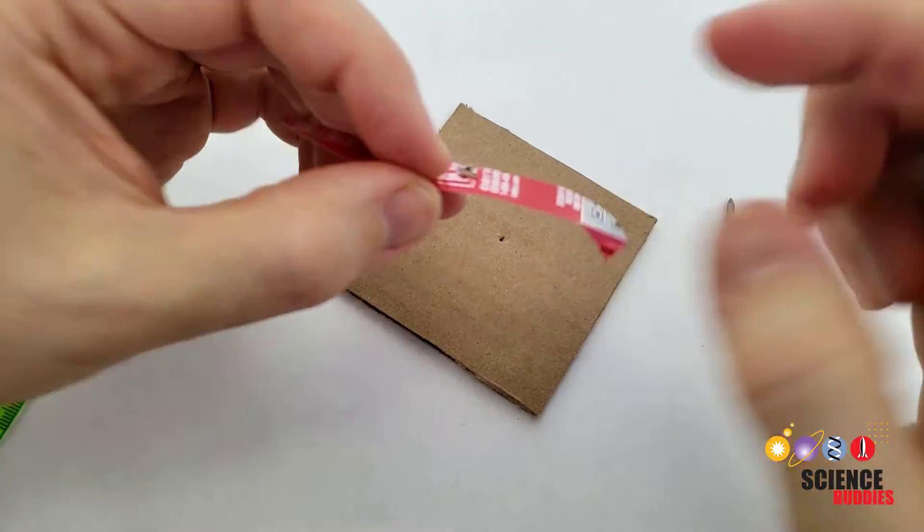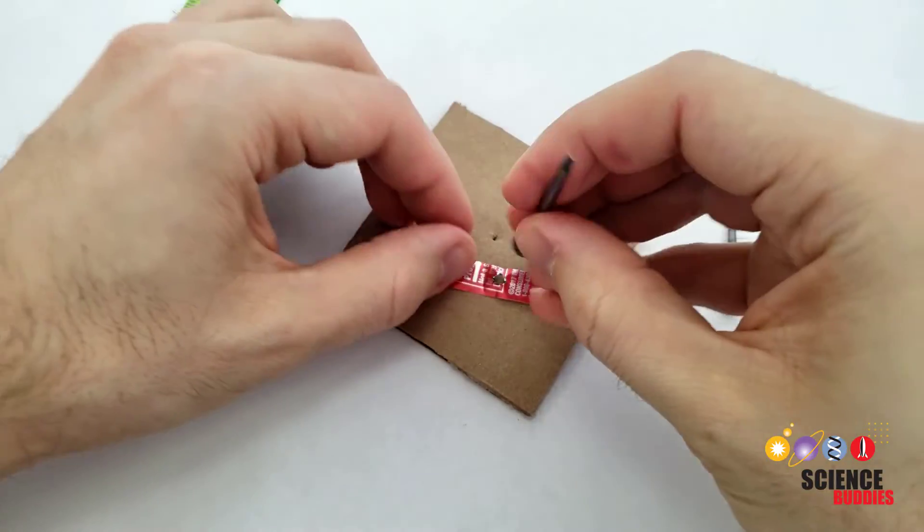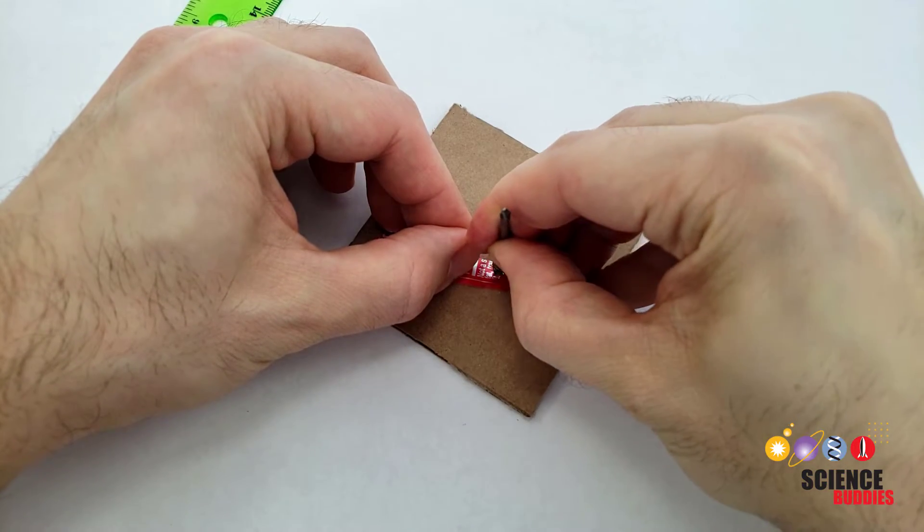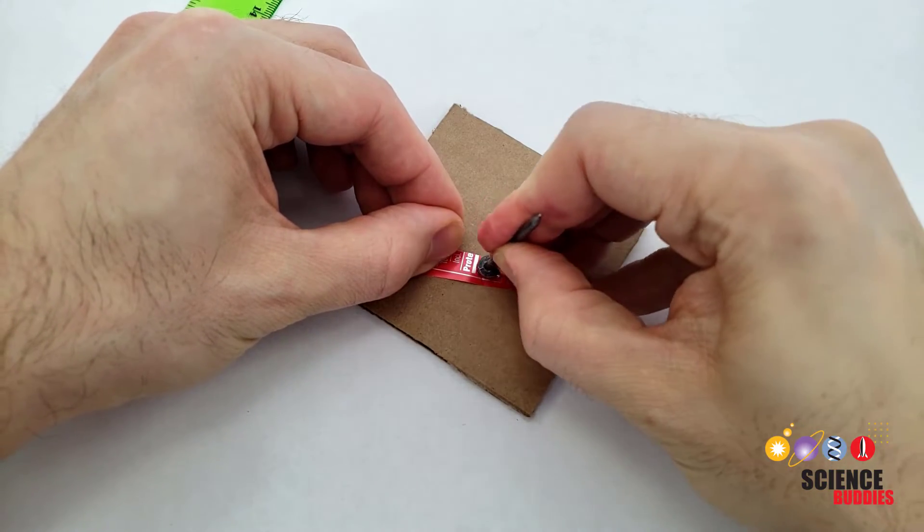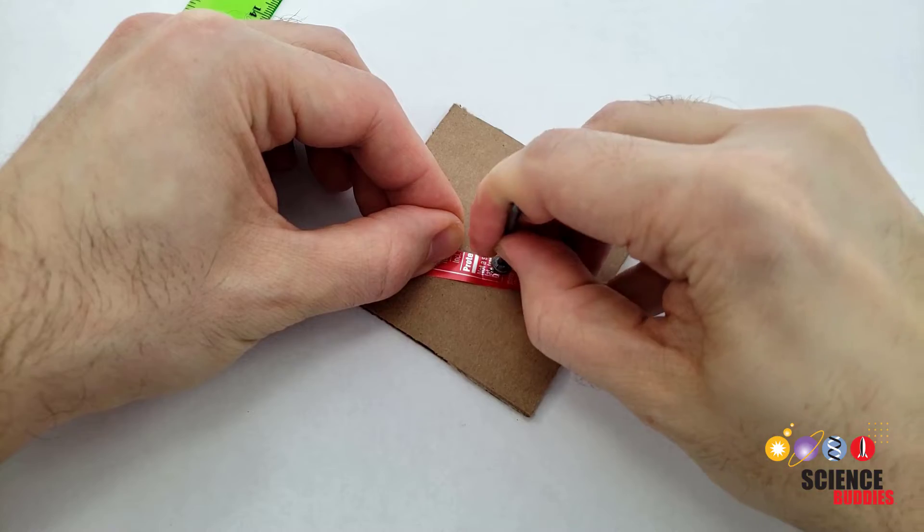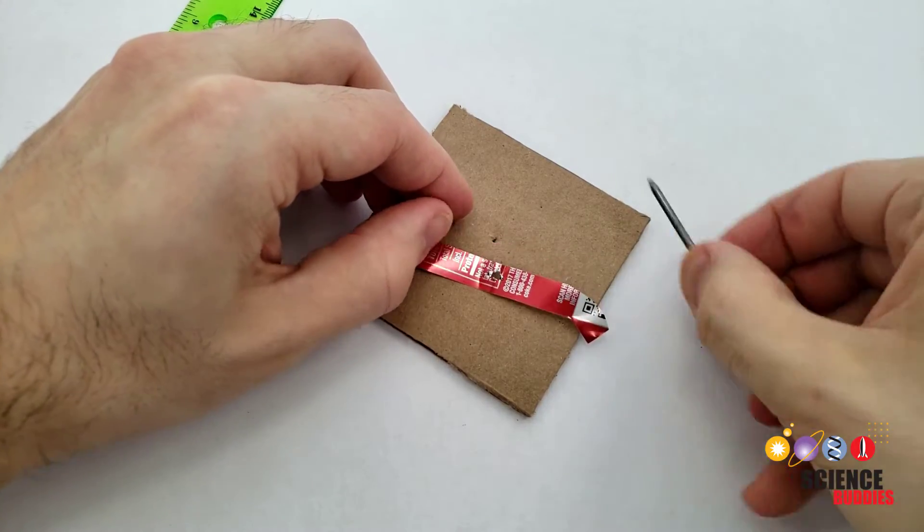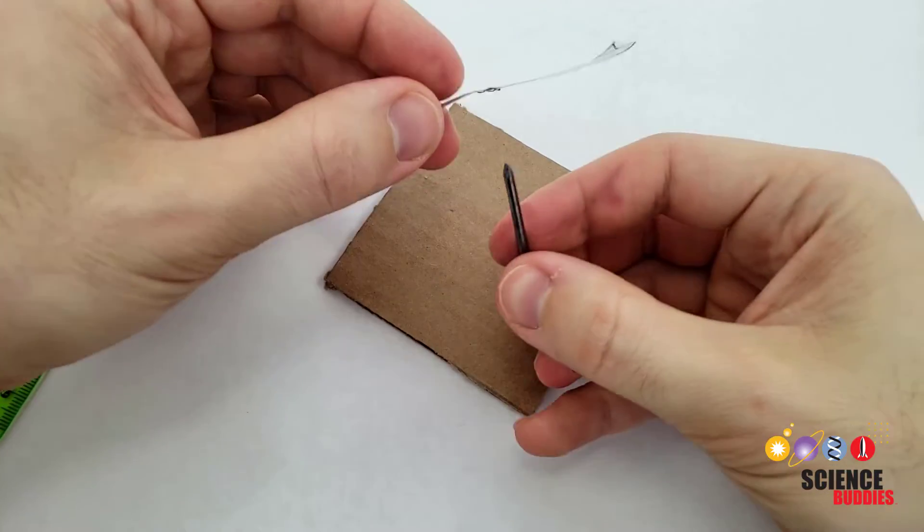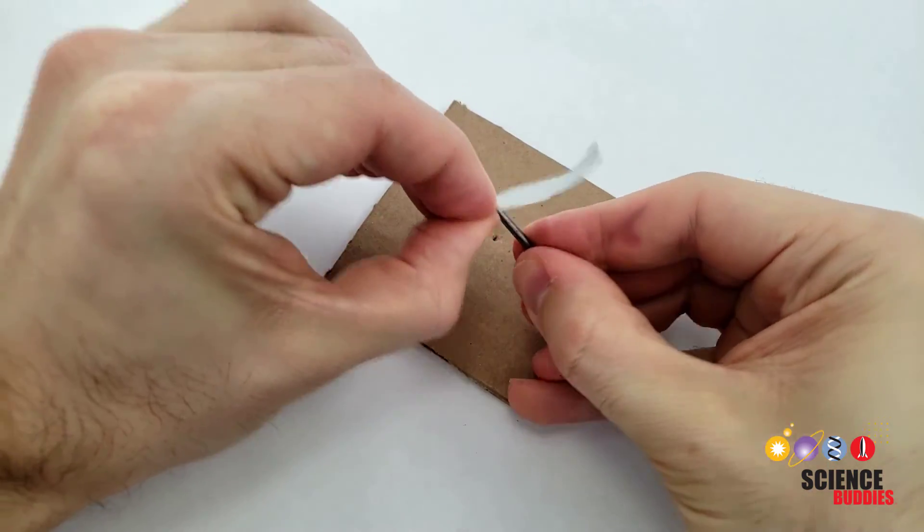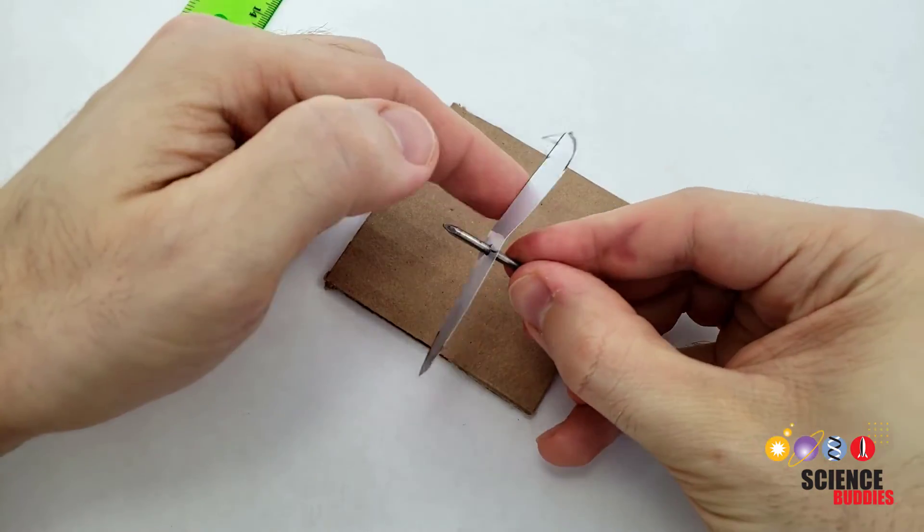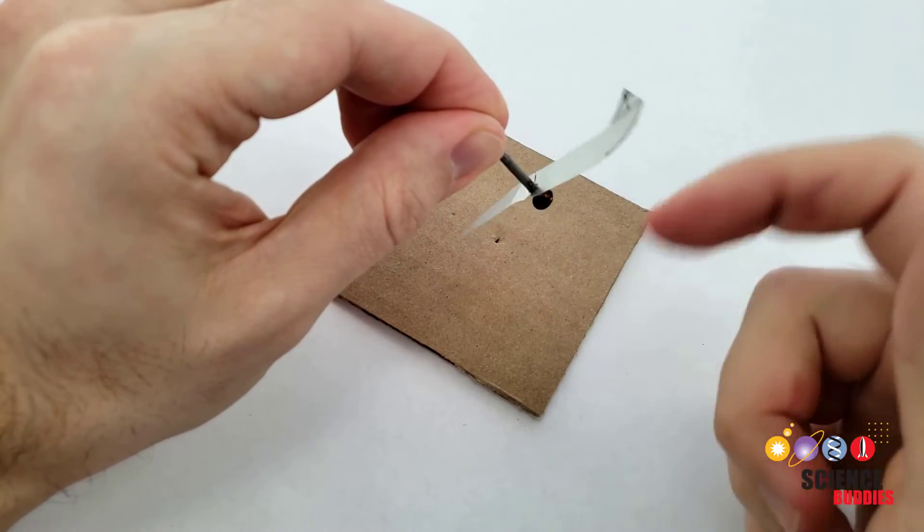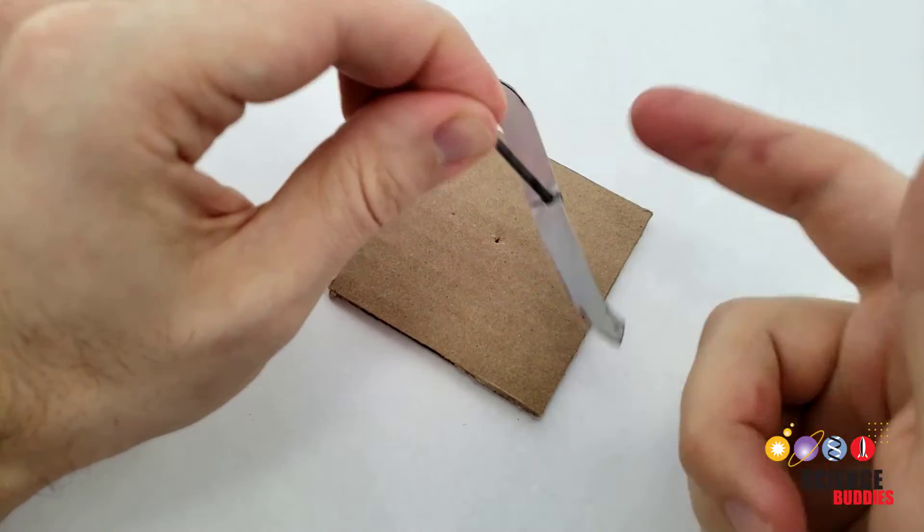After poking through, flip the rotor over and use the head of the nail to flatten any burrs or rough edges because these can get caught and prevent the rotor from spinning. After that, place the rotor on the smaller nail and see if it can spin without getting stuck. If it gets stuck, you might need to use the larger nail to widen the hole slightly. Repeat this process until it can spin freely on the smaller nail.